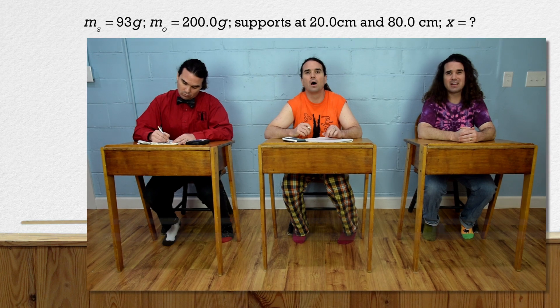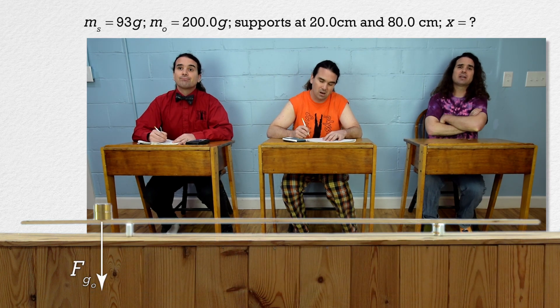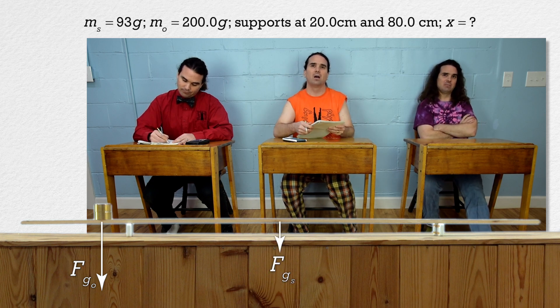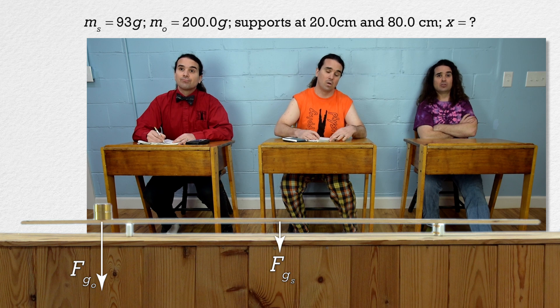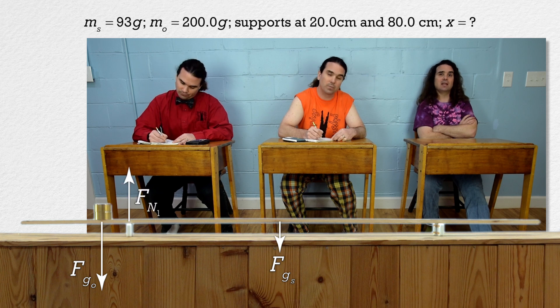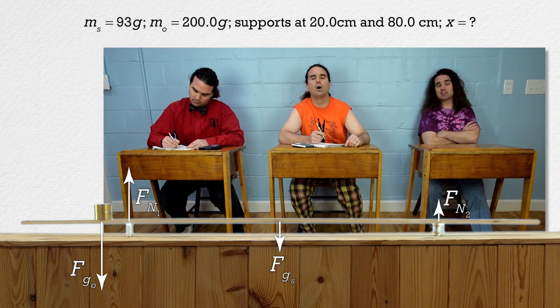Bo, please solve the problem. Well, let's start with a free body diagram. The force of gravity on the object acts down at the location of the object. The force of gravity on the stick acts down at the center of mass of the meter stick or the 50 centimeter mark. There are two normal forces caused by the dominoes, both act up at their respective locations, the 20 and 80 centimeter marks. Now that we have the free body diagram, let's sum the forces.